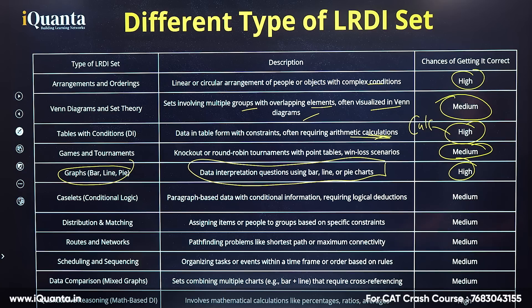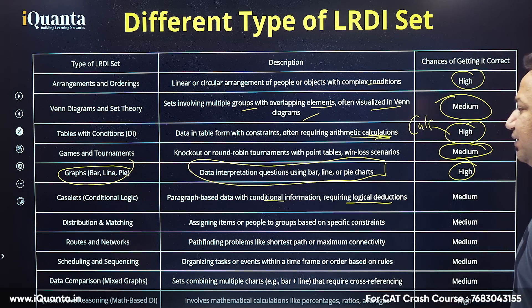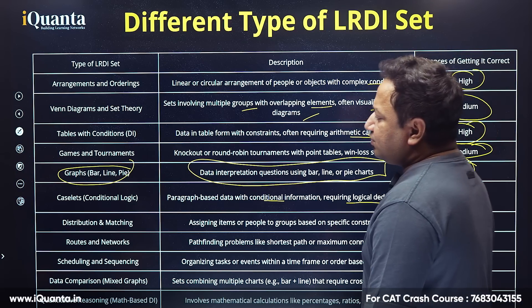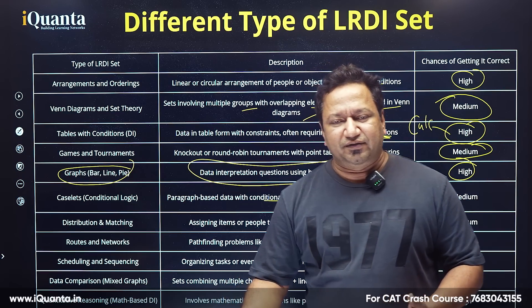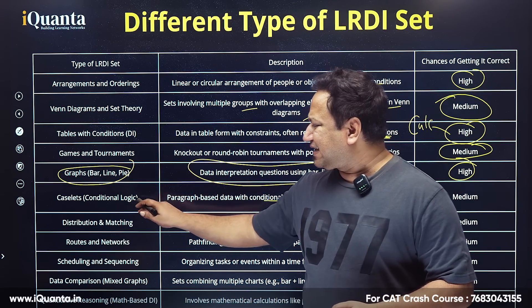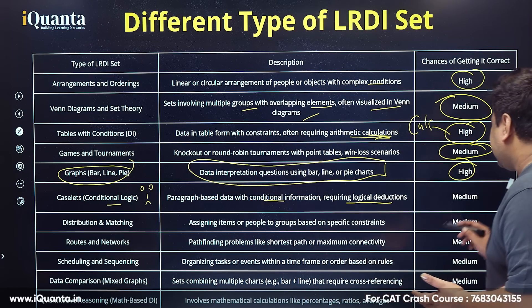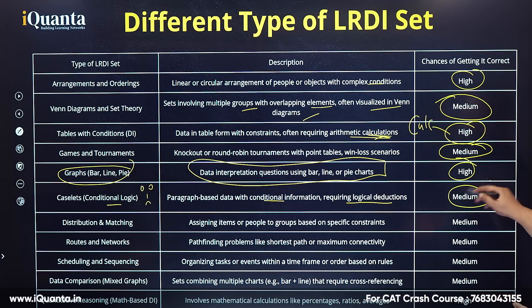Caselets is conditional logic — paragraph-based data with conditional information requiring logical deductions. Here, normally you cannot draw a table out of it; you can just put in some summaries. This can be difficult for some people, and the chance of getting it correct is medium. So the high-probability types — arrangements, tables with conditions, graphs, and quantitative reasoning — are the ones you should be selecting.